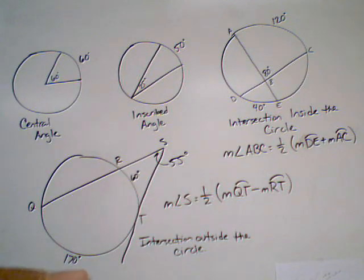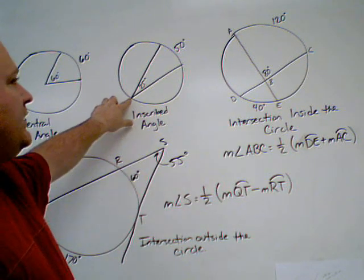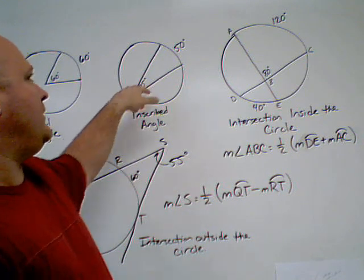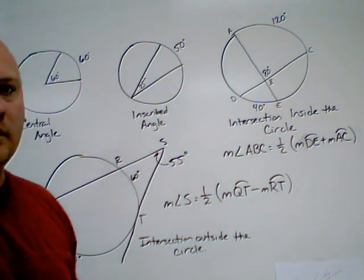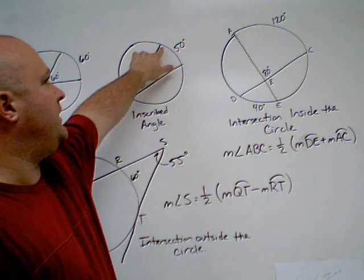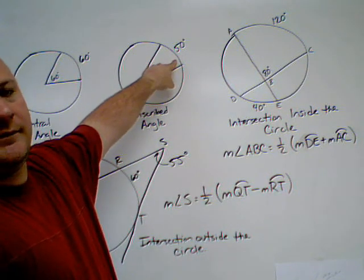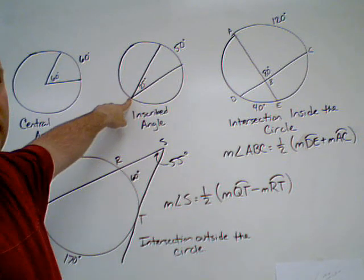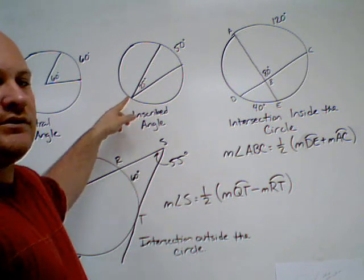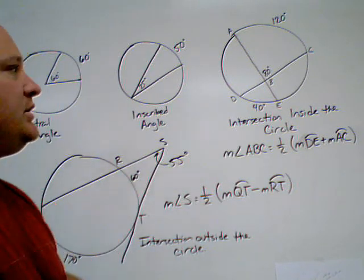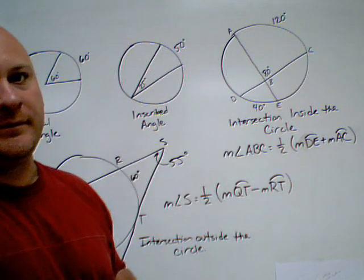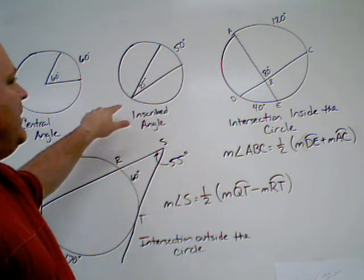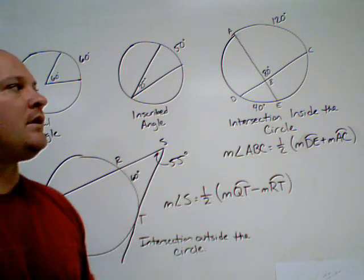Inscribed angles: the vertex of the angle is on the circle and it intercepts an arc in the same circle. So if the measure of the arc is 50 degrees, the inscribed angle is going to be 25. The inscribed angle is one half the measure of the intercepted arc. Another way to say it is that the intercepted arc is two times the measure of the inscribed angle.